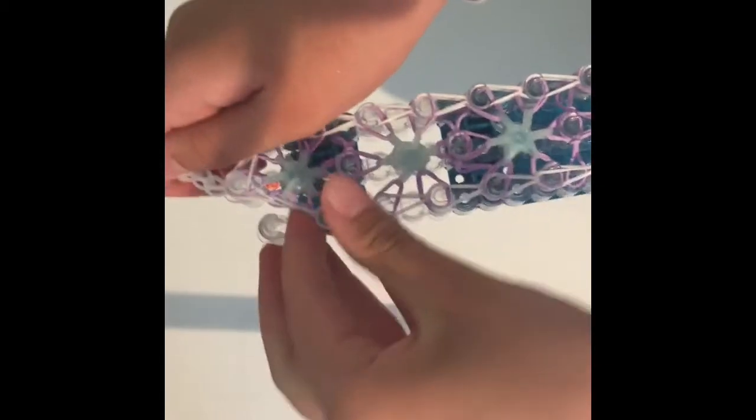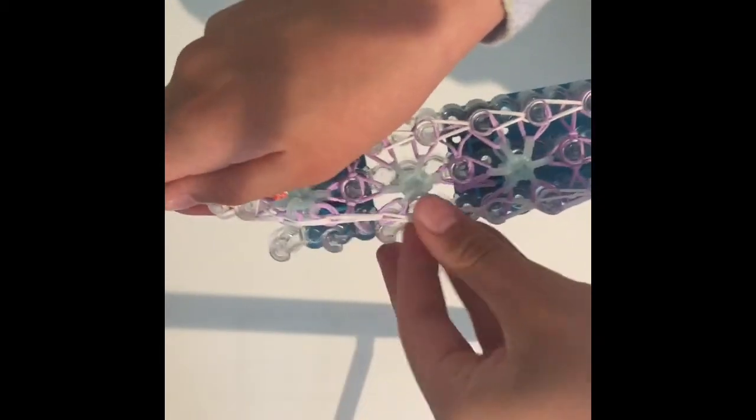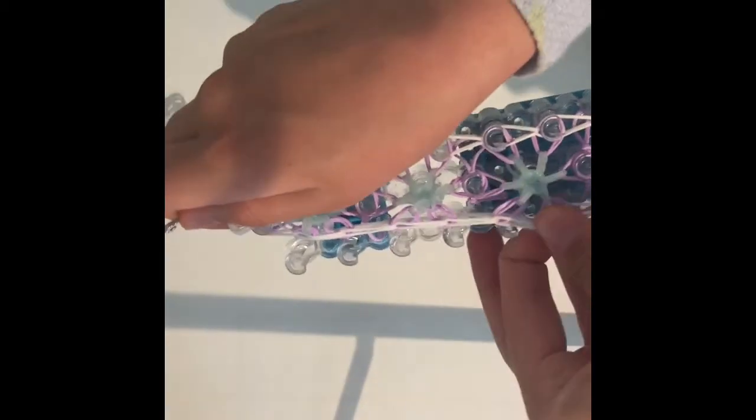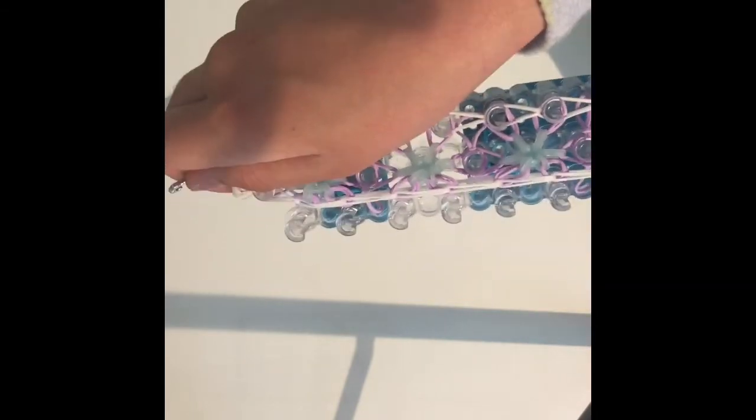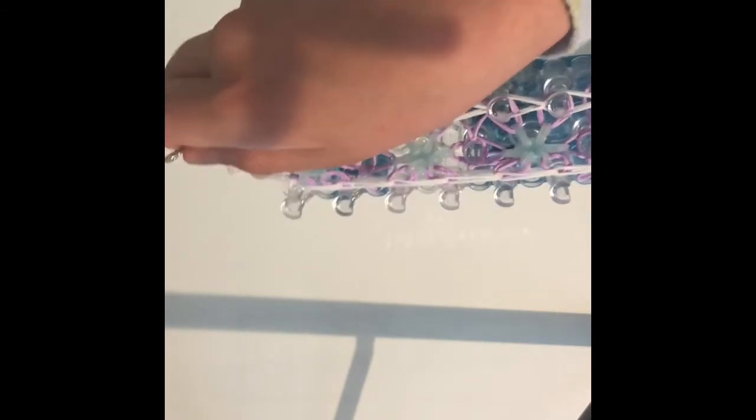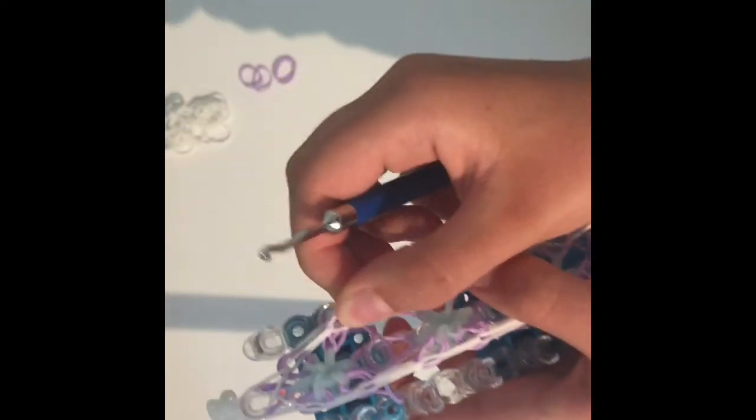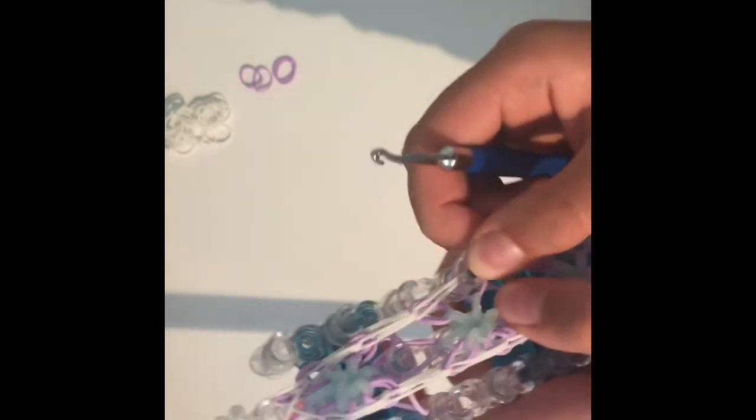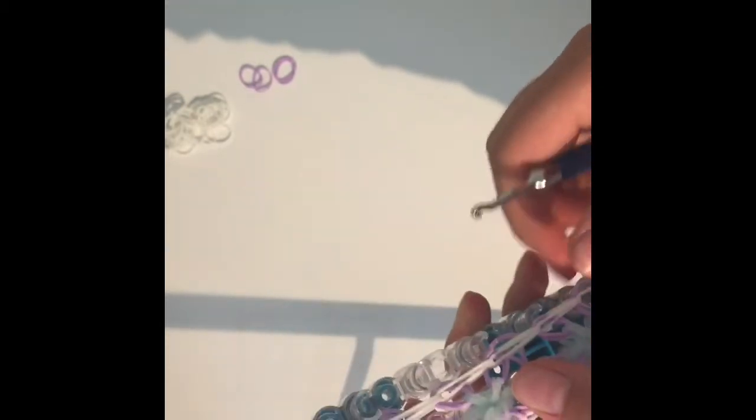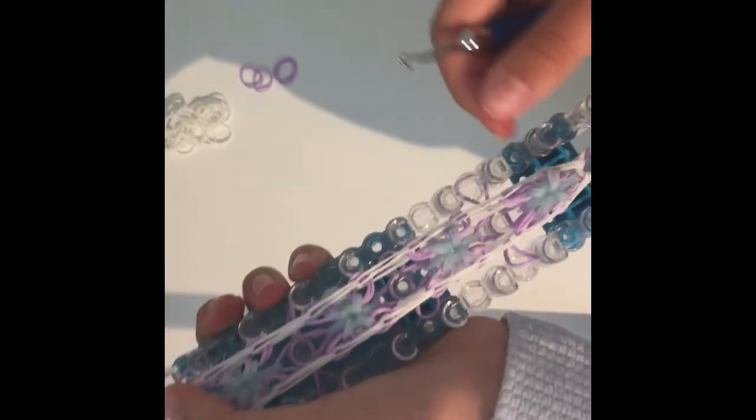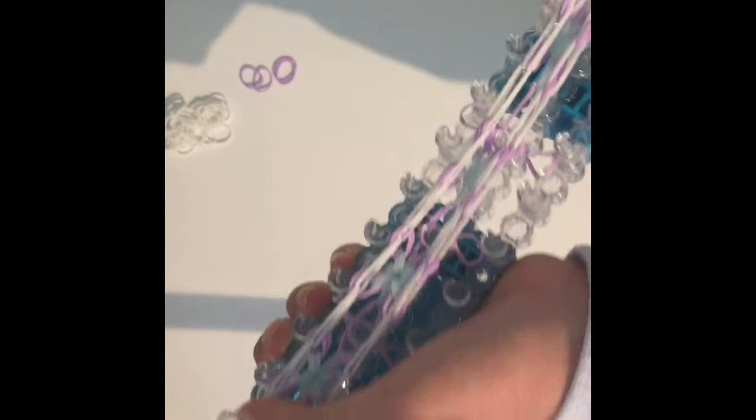Now you're going to very gently pull each band off each peg. Be very careful so no bands break. You don't want any to break. Because that would be a mess if they did, and you'd have to redo the whole thing. Then you just take your middle pegs off.